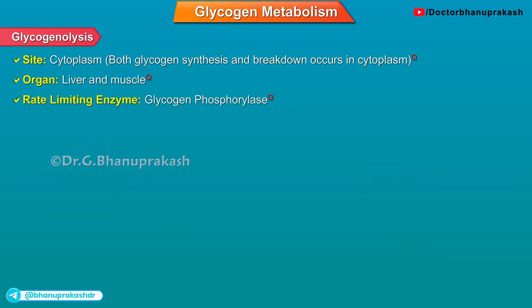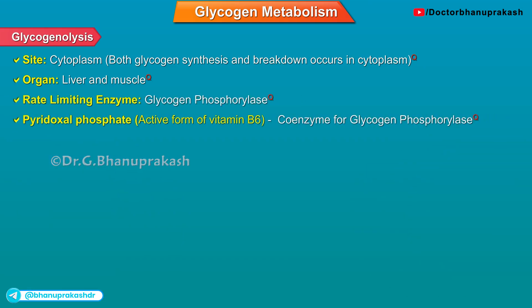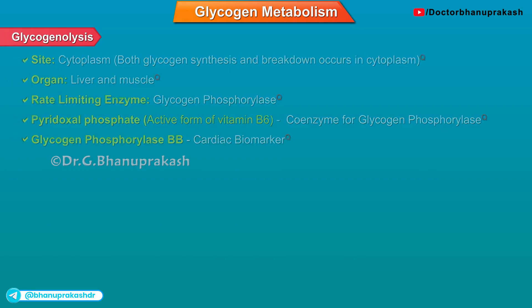The rate-limiting enzyme is glycogen phosphorylase. Pyridoxal phosphate, which is an active form of vitamin B6, is a coenzyme for glycogen phosphorylase. Glycogen phosphorylase BB is a cardiac biomarker.